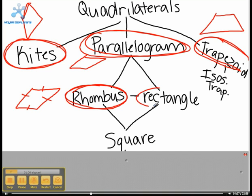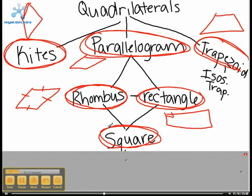A rectangle has two sets of parallel sides, and all the angles are 90 degrees. A square has two sets of parallel sides. All the sides are congruent, and all of the angles are 90 degrees.